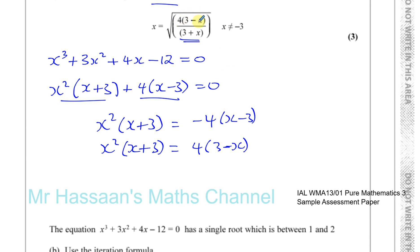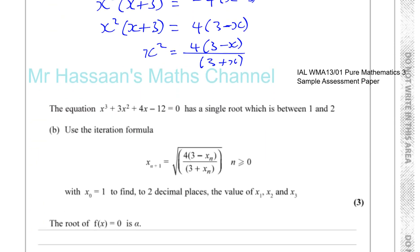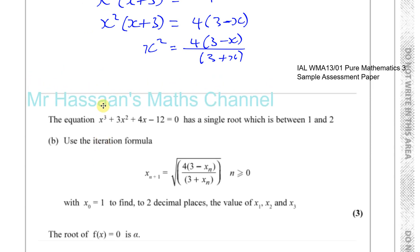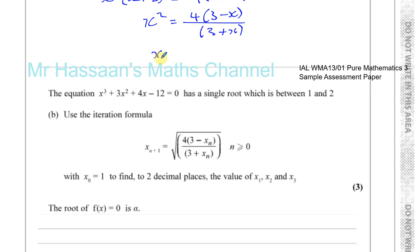Then we divide both sides by (x plus 3), so x squared equals 4 times (3 minus x) divided by (x plus 3). We can write that as (3 plus x) instead of (x plus 3) to match the required form. The last step is to take the square root of both sides: x equals the square root of 4 times (3 minus x) over (3 plus x), with all of that under the square root sign.